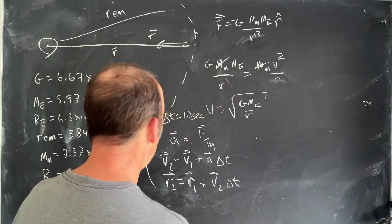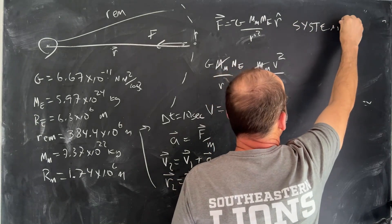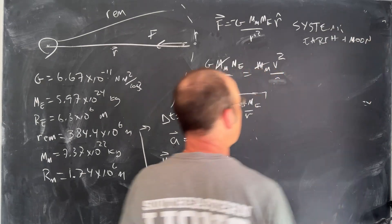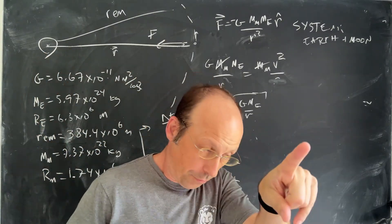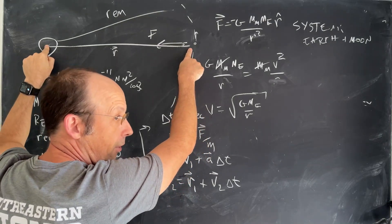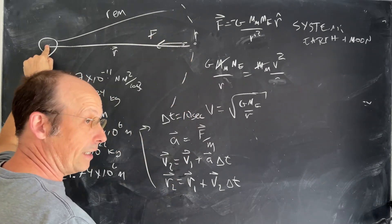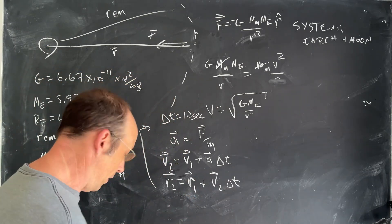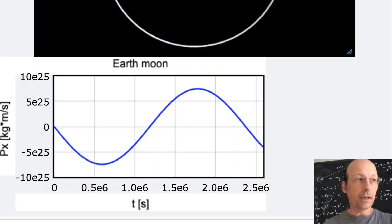The problem is I never defined my system. If my system is Earth plus Moon, I have to take into account the motion of the earth too. The earth moves because Newton's third law: the earth pulls on the moon, so the moon pulls on the earth with an equal and opposite force. I'll have to update the velocity and position of the earth as well. Let's modify our code.